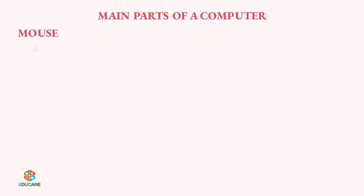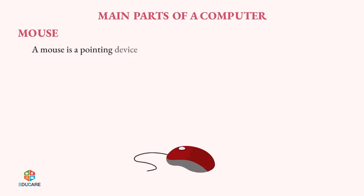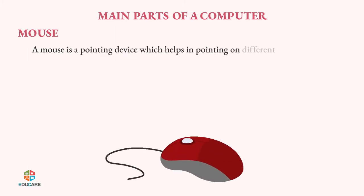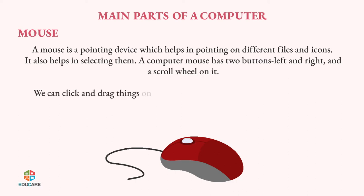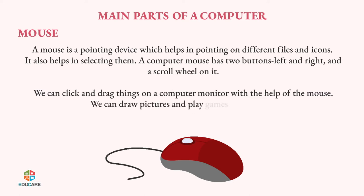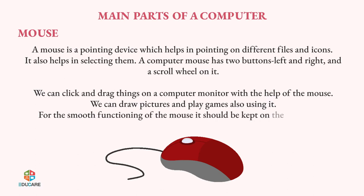Mouse. A mouse is a pointing device which helps in pointing on different files and icons. It also helps in selecting them. A computer mouse has two buttons — left and right — and a scroll wheel on it. We can click and drag things on a computer monitor with the help of the mouse. We can draw pictures and play games also using it. For the smooth functioning of the mouse, it should be kept on the mouse pad.